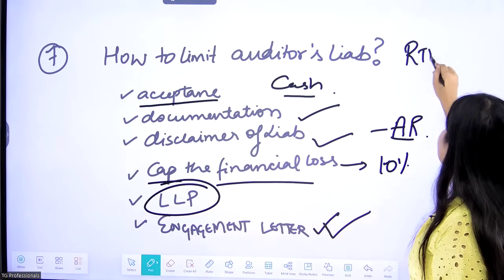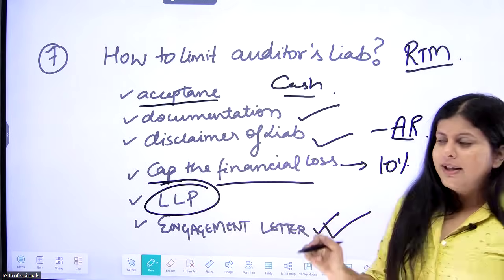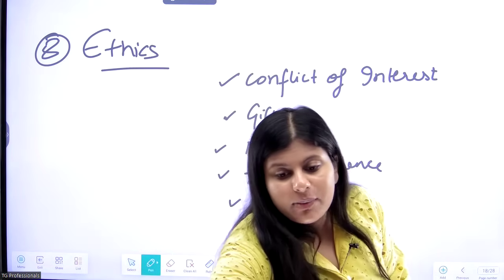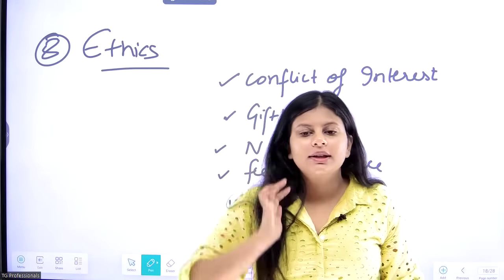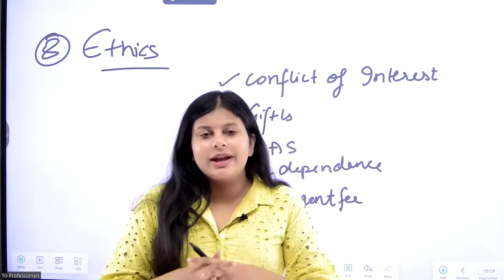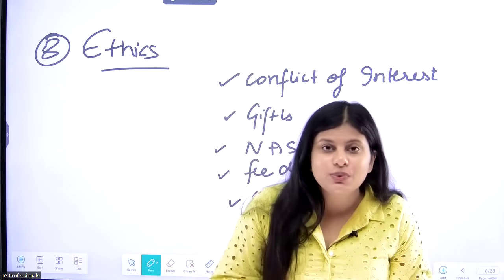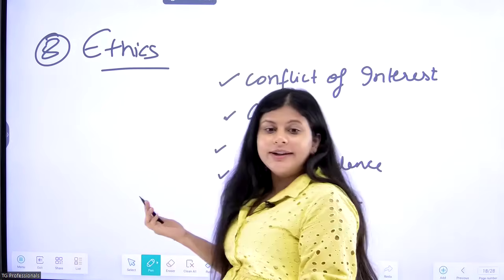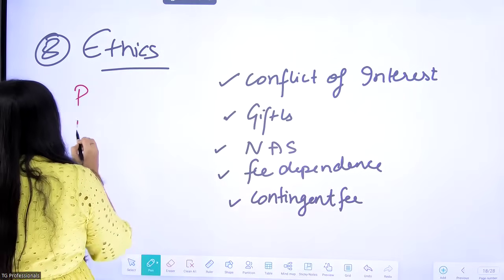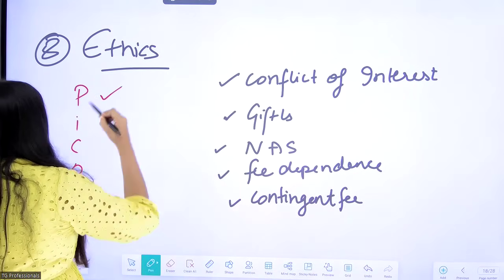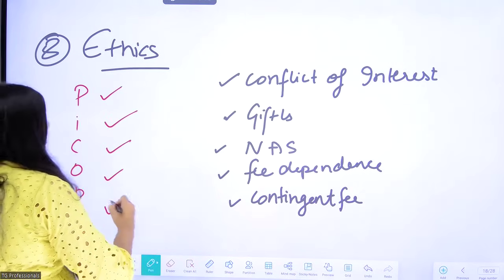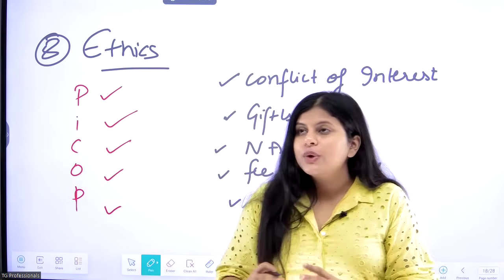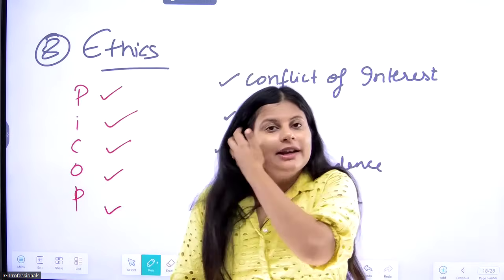Ethics plays a very important role in AAA — they may directly ask about ethical issues and safeguards in a case study. The five fundamental principles are PI CORP: Professional competence and due care, Integrity, Confidentiality, Objectivity, and Professional behaviour. At all times as an auditor you must follow PI CORP — you must be professionally competent, meaning you have the prerequisite knowledge and sufficient experience to carry out the work.